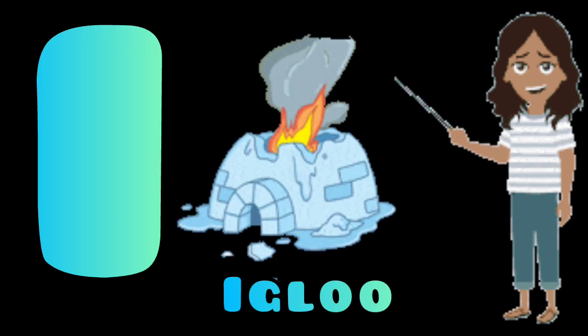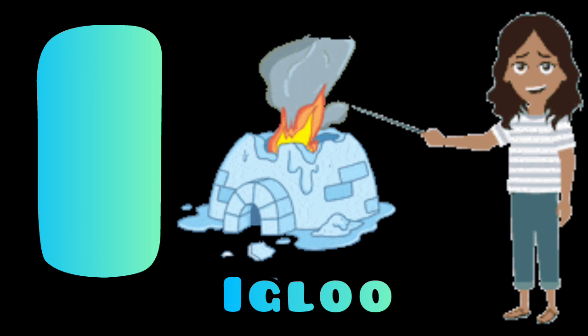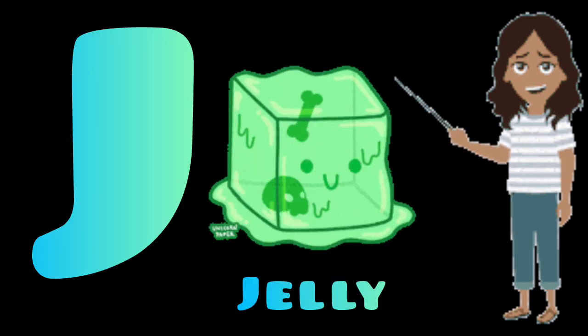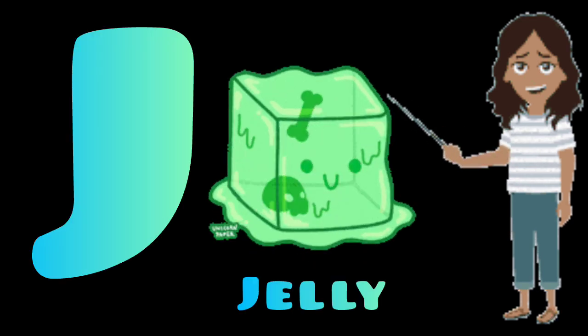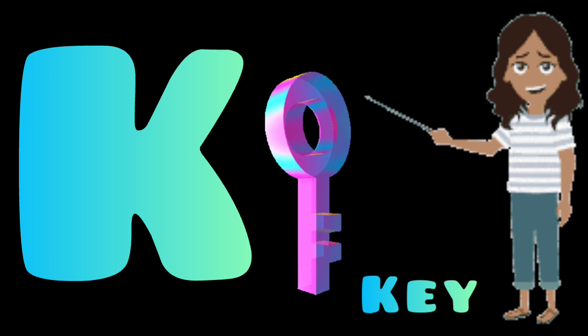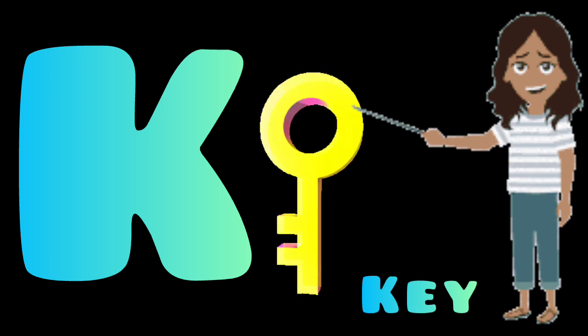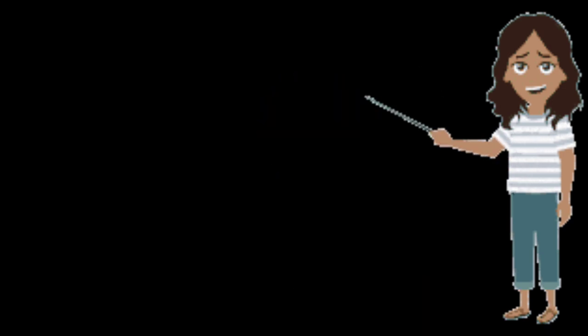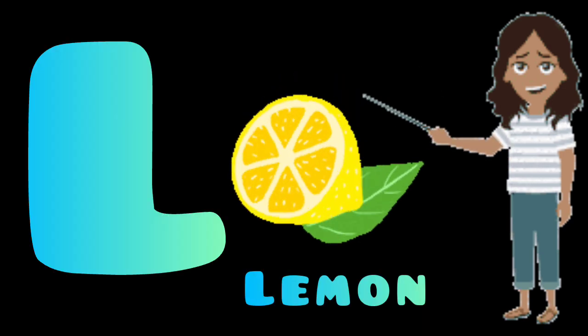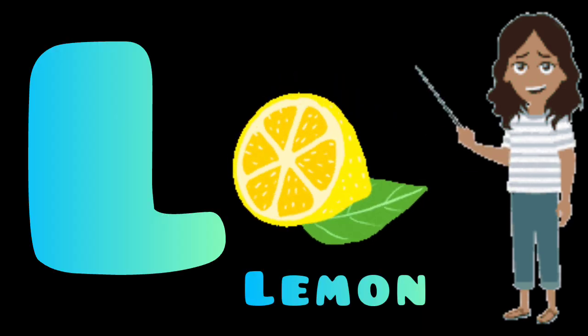I. I for igloo. J. J for jelly. K. K for key. L. L for lemon.